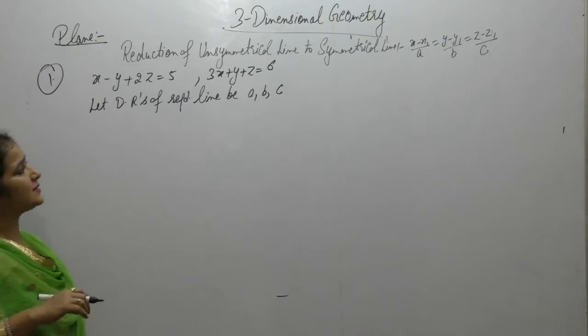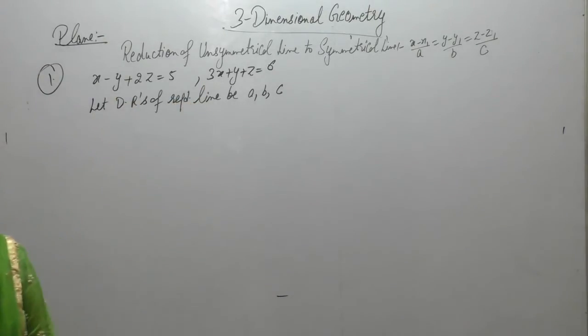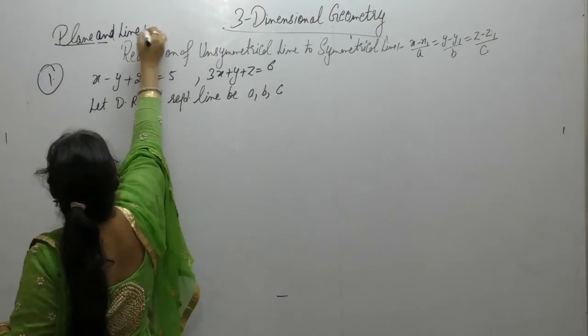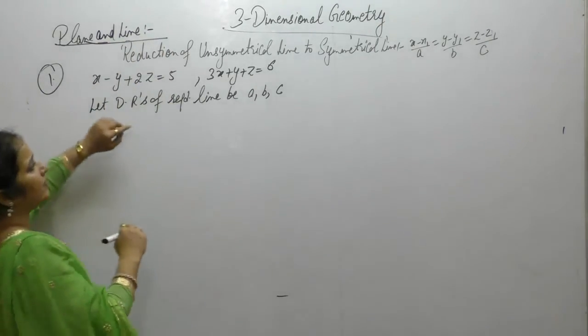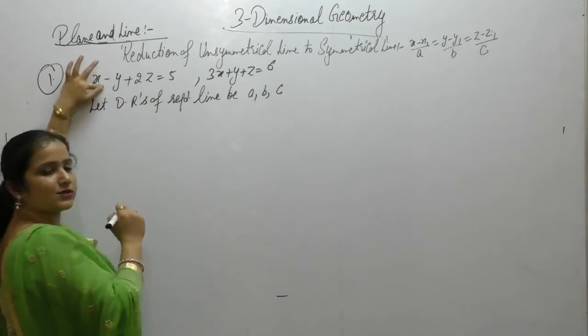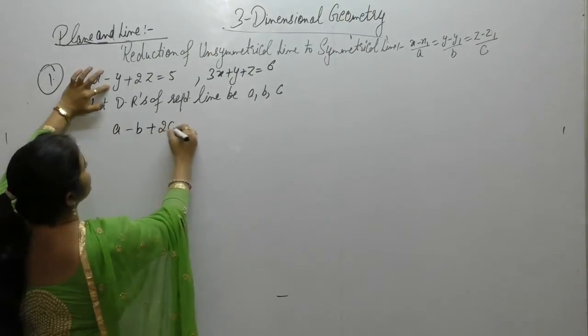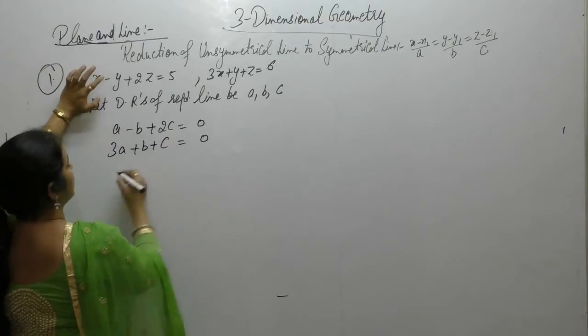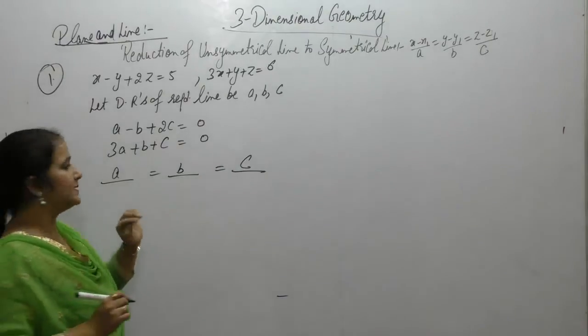Since the required line lies in both planes, then A1, A2, B1, B2, C1, C2 equals to 0, 1 into A, 1 into B, 2 into C, 3 into A, 1 into B and 1 into C. By using cross multiplication, solve for A, B and C.